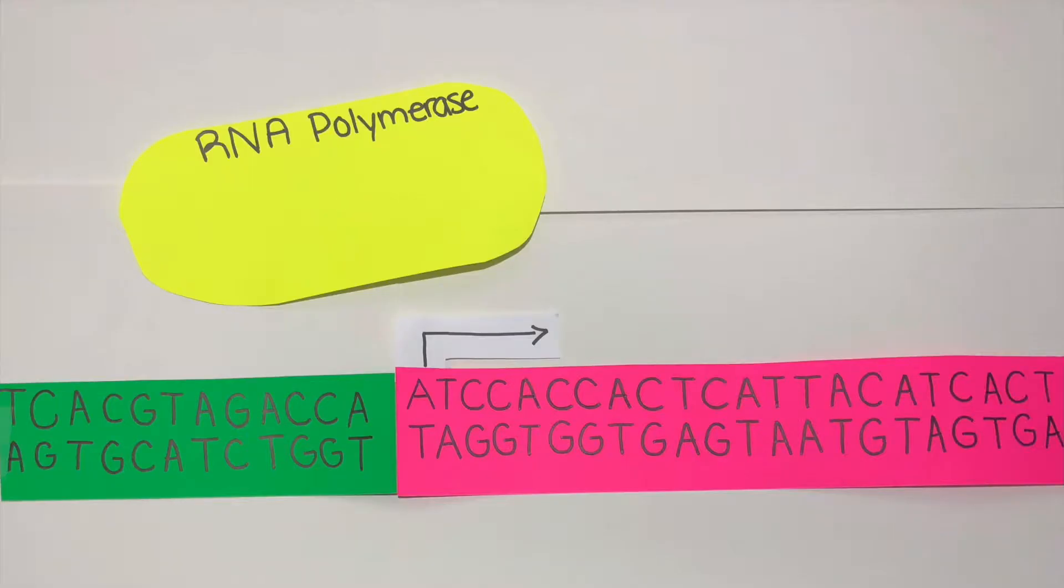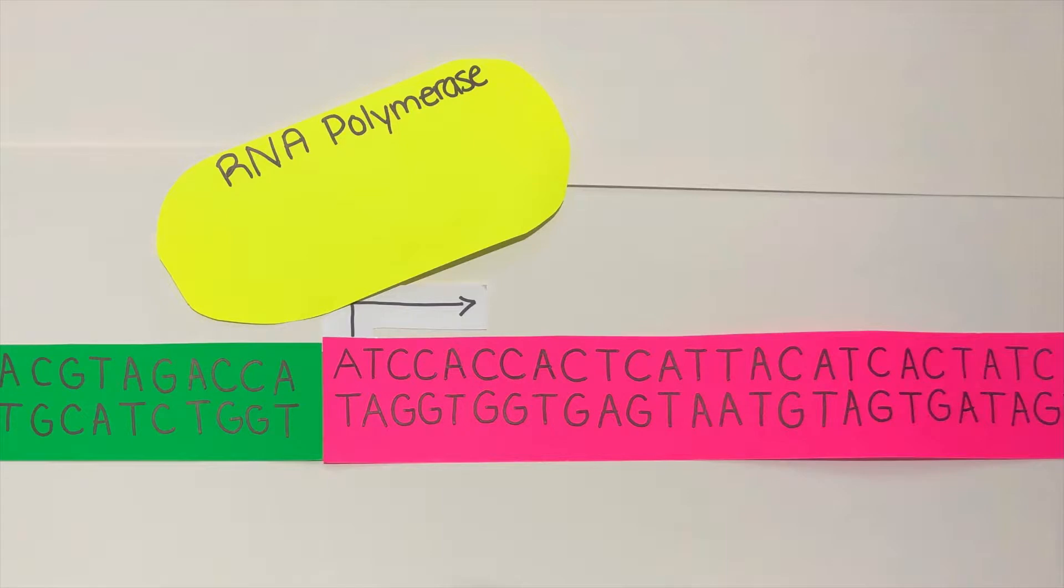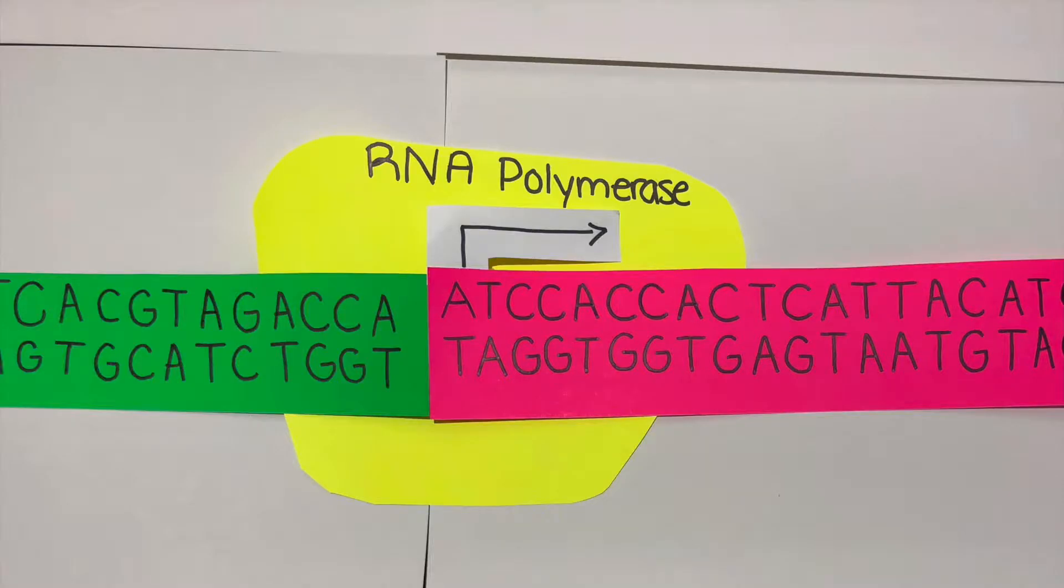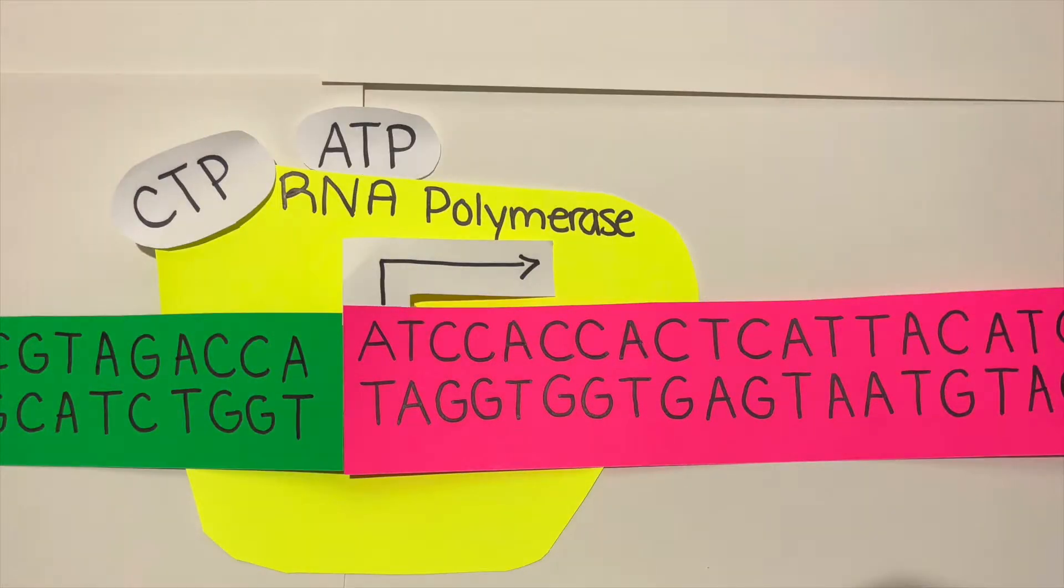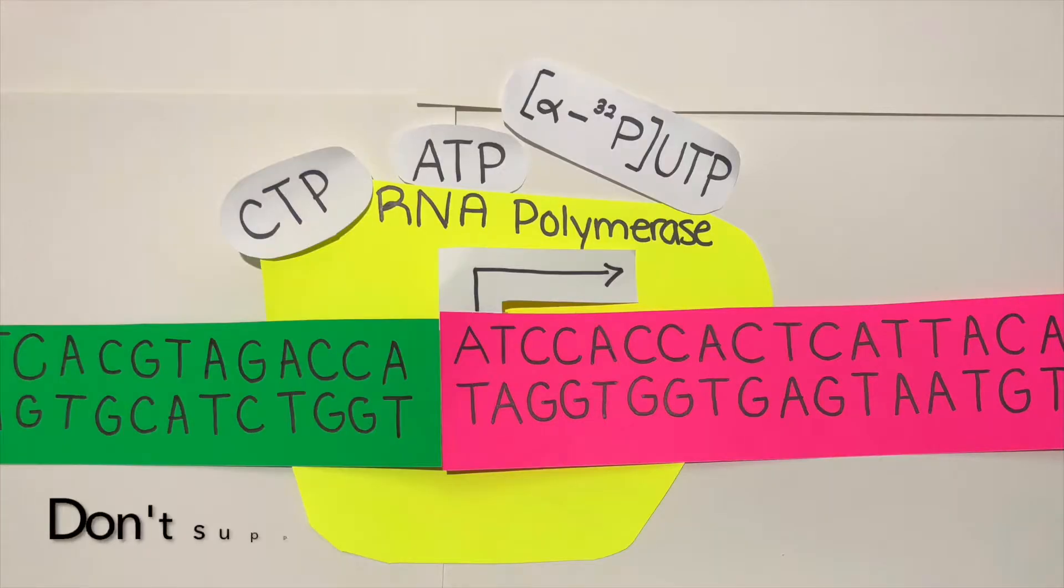Once the promoter is inserted into the plasmid, we add RNA polymerase. This is an in vitro reaction so we can control what ribonucleotides RNA polymerase can use for transcription. We supply RNA polymerase with CTP, ATP, and alpha-32P labeled UTP, but no GTP.